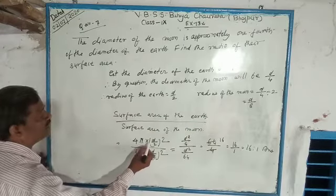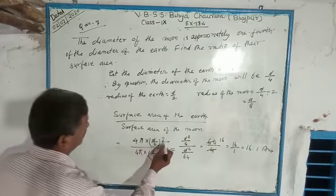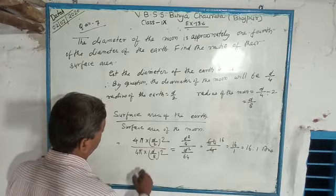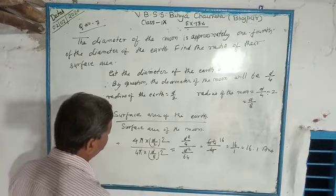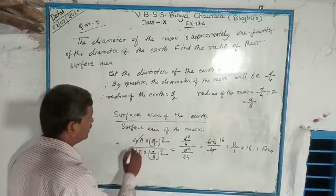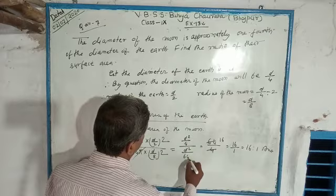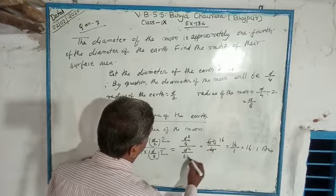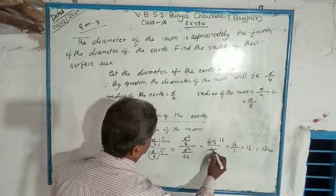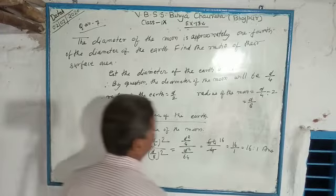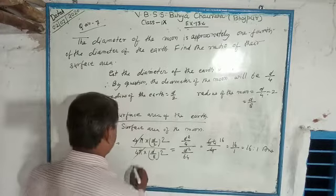The radius is d by 2... d by 2 squared... the distance is d square, the radius is d by 2 square... d square... the formula... surface area.